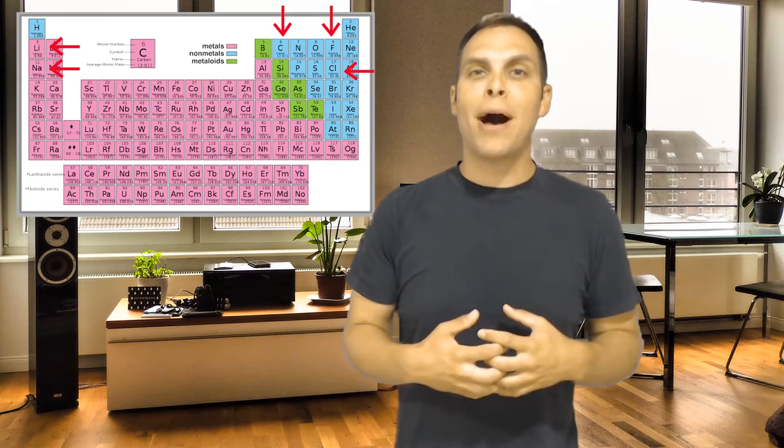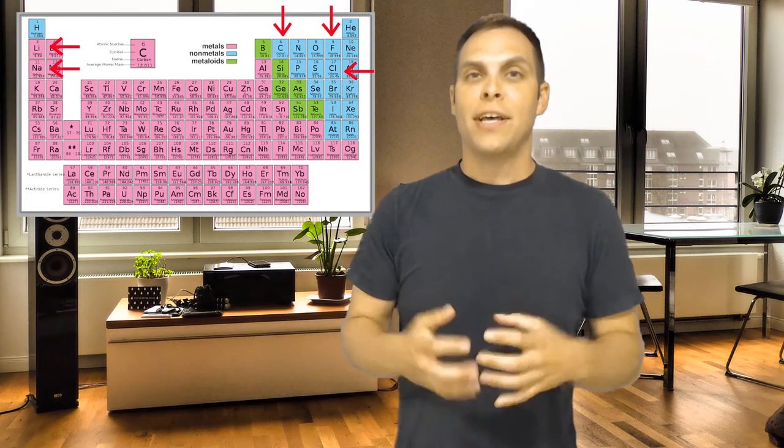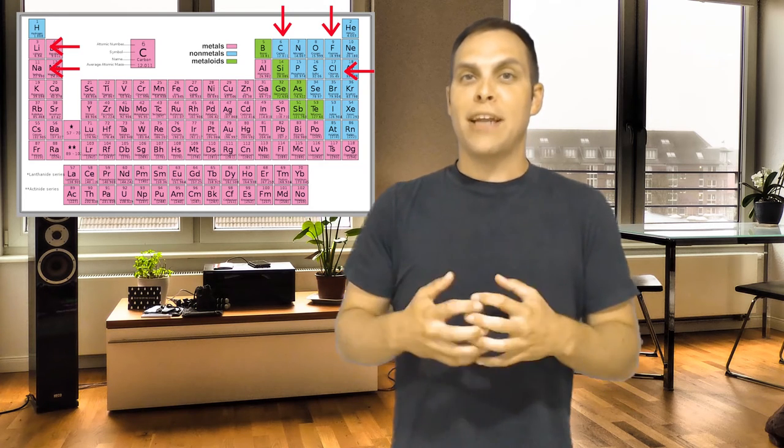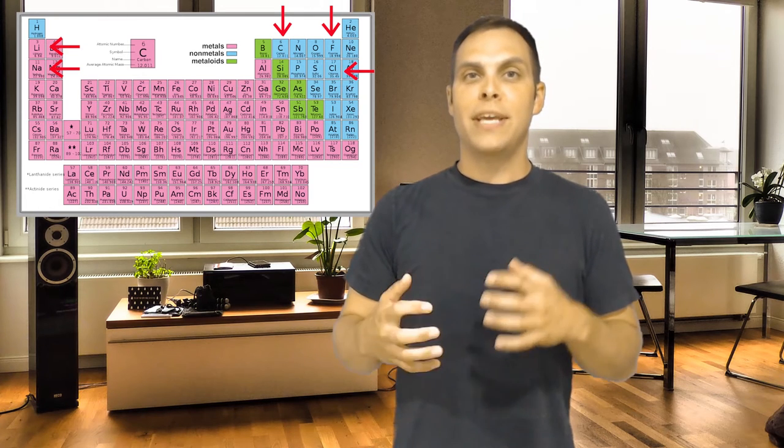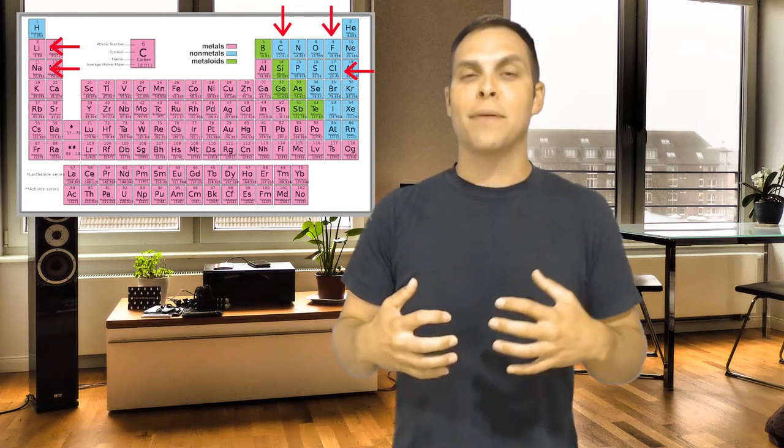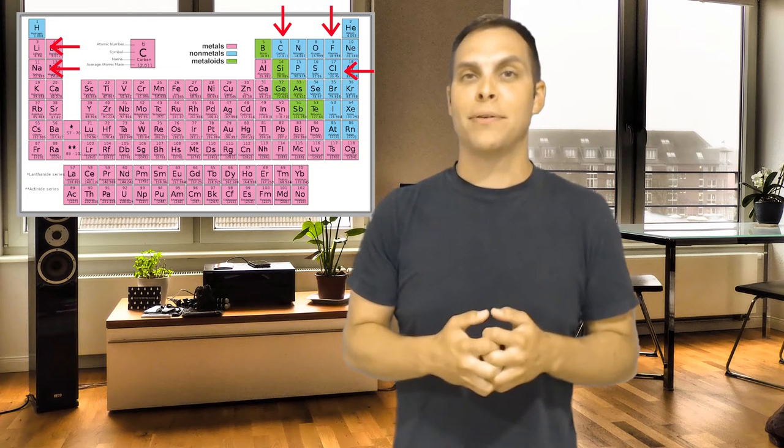So when we talk about atoms combining with each other, this whole interaction, anytime you have an interaction between two different atoms, at least in our biological context, what we are talking about is the electrons from two different atoms, or two or more different atoms, coming together to form a compound. So what I want to talk about now are the three major types of chemical bonds that are relevant in biological chemistry.